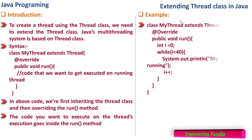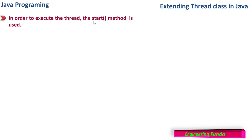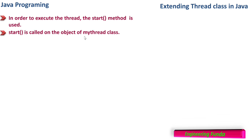Here is an example. We have the class MyThread that extends Thread and we override public void run. Inside run, there is: int i = 0; while i < 40, System.out.println("My thread is running"); i++. So this loop will execute 40 times and the statement 'my thread is running' will be printed 40 times in parallel. To execute the thread, the start method is used. The run method is not called directly — instead, we call the start method defined in the thread class, and that start method calls run, putting it into a separate thread and executing it in parallel.